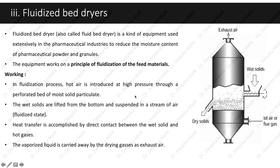Fluidized bed dryers, also called fluid bed dryers, are equipment used extensively in pharmaceutical industries to reduce the moisture content of pharmaceutical powders and granules. The equipment works on the principle of fluidization of feed materials. Hot air is introduced at high pressure through a perforated bed of moist solid particulate, as seen in the diagram. The wet solids are lifted from the bottom and suspended in a stream of air — they are now in a fluidized state. Heat transfer is accomplished by direct contact between the wet solid and the hot gases, and the vaporized liquid is carried away by the drying gases as exhaust air.